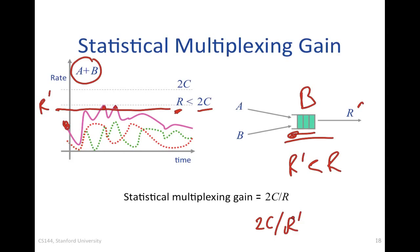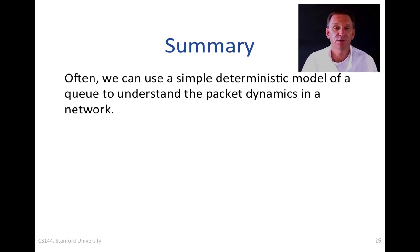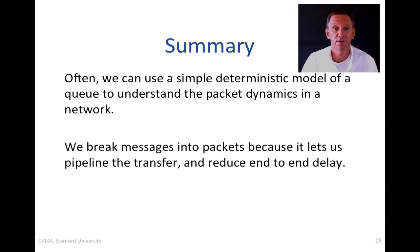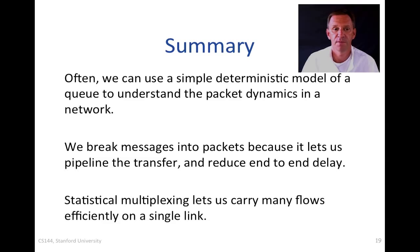In summary: first, we can use a simple deterministic queue model to understand packet dynamics in a network — it gives a very good intuitive understanding. Second, we break messages into packets because it lets us pipeline the transfer from one end to another, reducing end-to-end delay. Finally, statistical multiplexing lets us carry many flows efficiently on a single link, and this is one of the prime reasons we use packet switching.